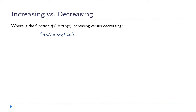A number squared is always positive, so secant squared x is greater than zero everywhere, always. However, you have to be a little careful — I can't say it's increasing everywhere, because the function isn't defined everywhere. The tangent function is undefined at x = π/2, 3π/2, 5π/2, and so on.